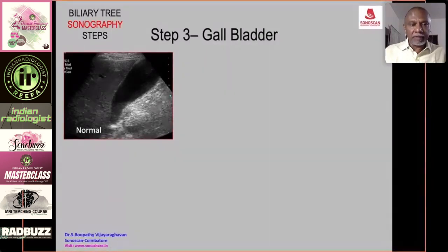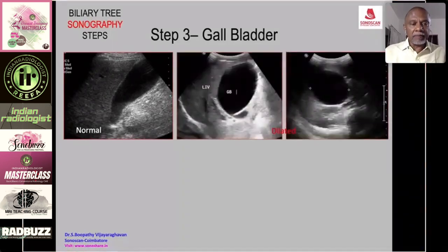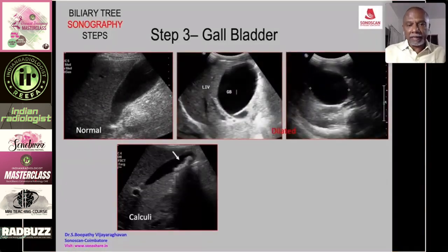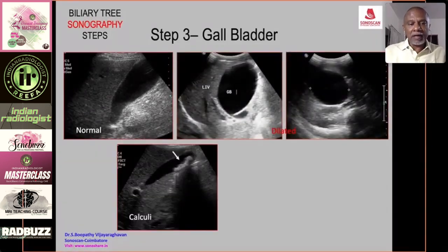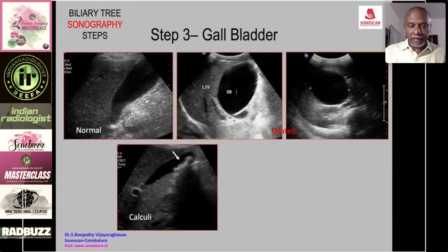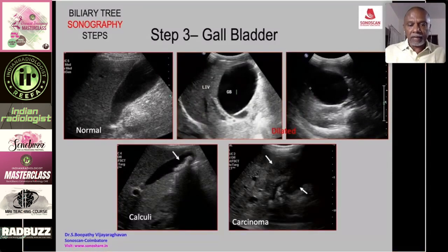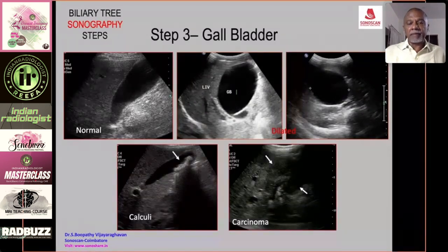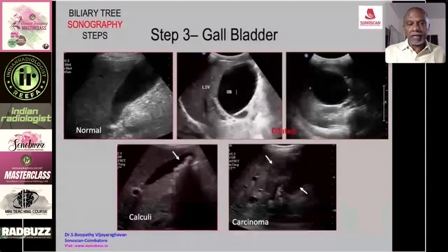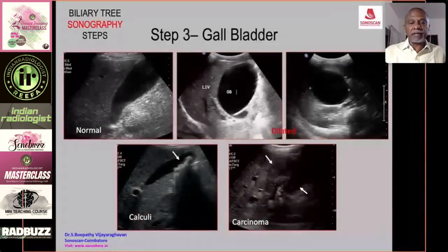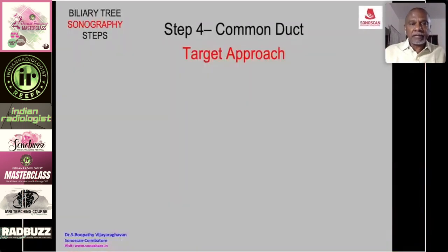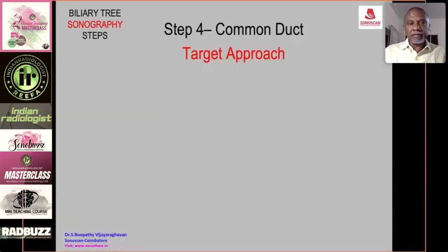Step three is the gallbladder. Look for the long axis scan — it may be normal, dilated, contain gallstones, or the gallbladder may be replaced by carcinoma in a case of jaundice.